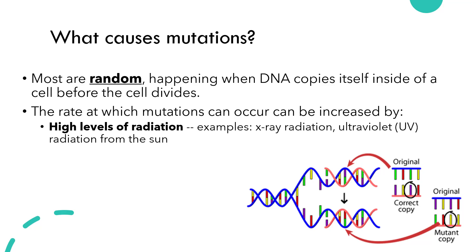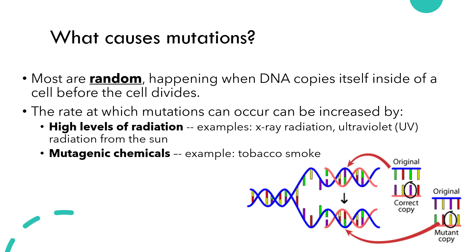That's why it's so important to protect yourself by wearing hats and clothing and reapplying sunscreen regularly when you're out in the sun. Another thing that can increase the rate of mutations occurring is mutagenic chemicals — chemicals that increase the rate of mutations. An example of this is tobacco smoke, which contains carcinogens or chemicals that can cause cancer. Smoking is a major risk factor for various cancers, including lung, mouth, and throat cancers. Another thing that can increase the rate of mutations is very high temperatures, because high temperatures cause chemical reactions to happen faster, increasing the odds of DNA damage and disrupting the stability of DNA molecules.